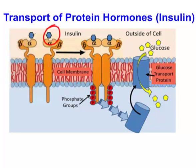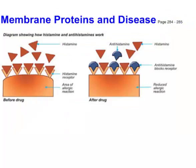That receptor molecule then stimulates a protein called the glucose transport protein to move into the membrane, and it's this protein that actually allows glucose molecules to enter the cell. This is how the message is transmitted — it's all done chemically. Insulin is one example of this process.